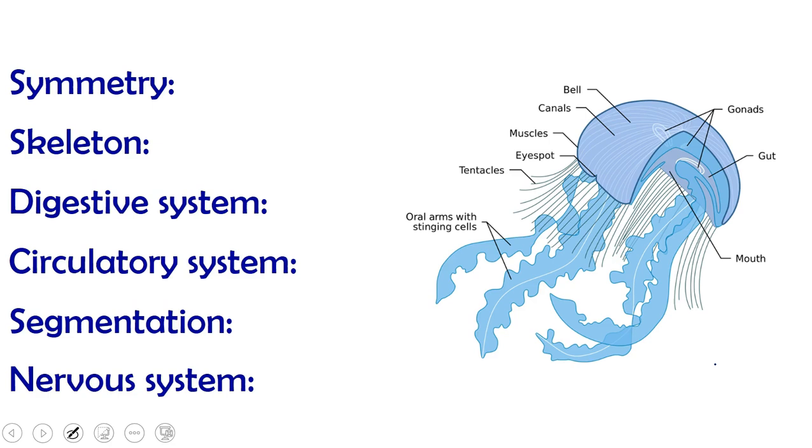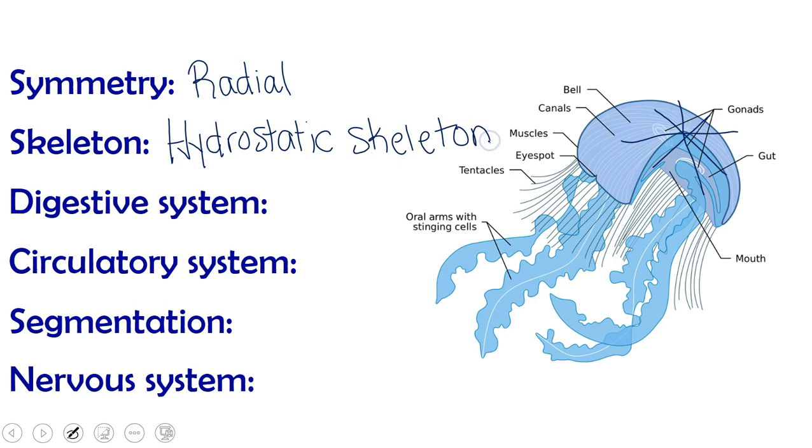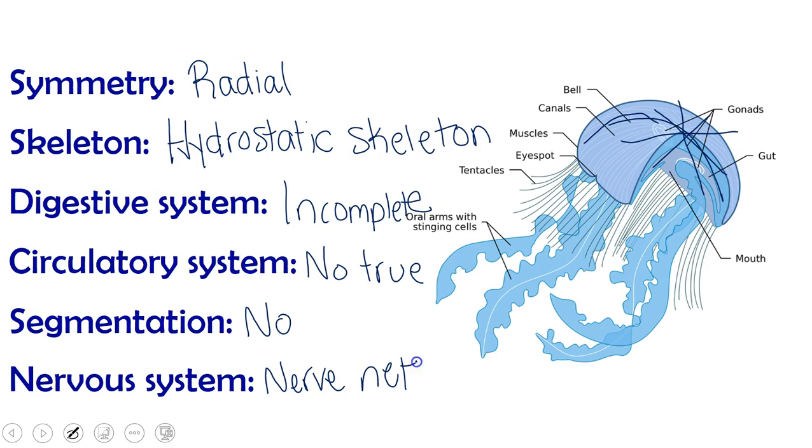So let's take a look at our six characteristics. For symmetry, we have radial symmetry. If we are looking at an anemone or a jellyfish from above, we can cut it anyway as long as we're going through the central axis to get mirror image halves. For their skeleton, they have a hydrostatic skeleton. The gel inside them is called mesoglia and their muscles pull against that gel. For the digestive system, there's only one opening, which means it is an incomplete digestive system. For their circulatory system, they don't really have one. Fluids and dissolved substances just diffuse across their tissues. They have no segmentation. And for their nervous system, they have a nerve net that reaches across their bell and sometimes down into their tentacles. They do not have a concentrated brain area.